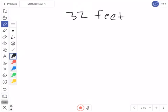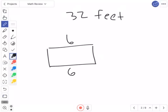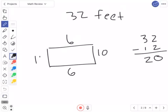What's a big number I could do? Well, I'm going to start with six again. Six plus six is 12, so I'm going to do 32 minus 12. Two minus two is zero, three minus one is two, so 20. That means 10 goes on each of those sides. Length times width, six times 10 is 60. That's a pretty big area.